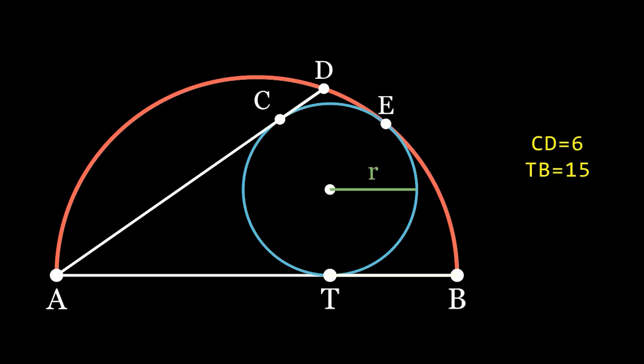First, we should note that if we extend the radius of the blue circle drawn through point E, this line will intersect AB in the middle, since it is the diameter of this same circle. This is not difficult to prove if we consider the common tangent of two circles at point E.